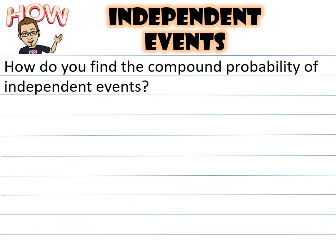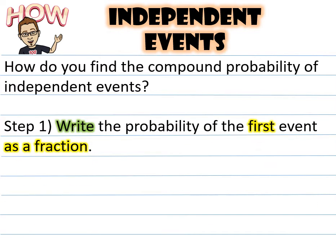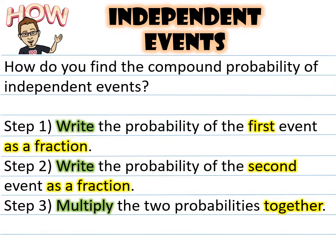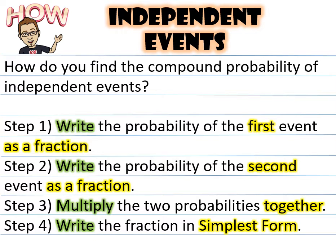How do you find the compound probability of independent events? Step one: write the probability of the first event as a fraction. Step two: write the probability of the second event as a fraction. Step three: multiply the two probabilities together. Step four: write the fraction in simplest form.